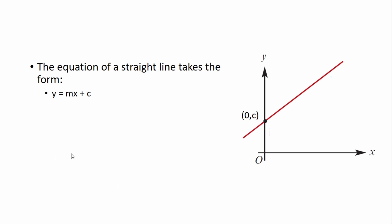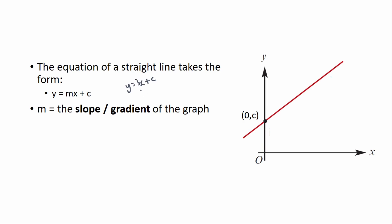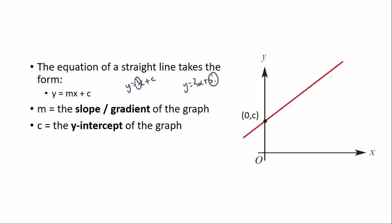The number that takes the position of m is the slope or gradient of the graph. So if you had y equals 3x plus c, the gradient would be 3. And c is just the y-intercept. So if you had y equals 3x plus 3, the y-intercept would be 3.